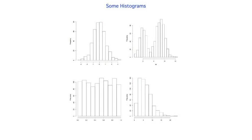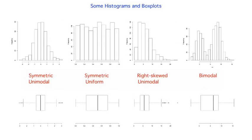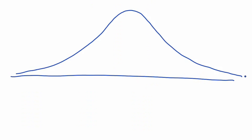Earlier we looked at four examples of shapes of distributions seen in histograms. For symmetric and right skewed distributions, we can see the overall features of shape in both the histogram and the box plot. For the bimodal distribution, the box plot fails to capture the two peaks, so this is a situation where a histogram can be more useful than a box plot. Unimodal and symmetric distributions with histograms that have roughly a bell shape are very common, and are very important in the work we'll be doing later in the course. For data with this shape, the standard deviation is an important measure of spread or variability.